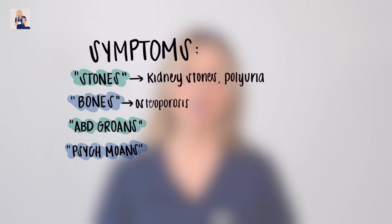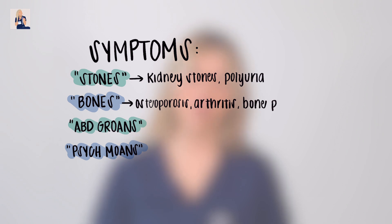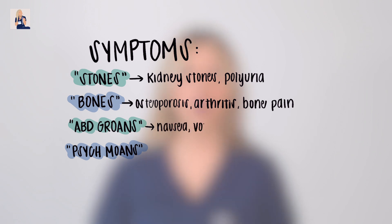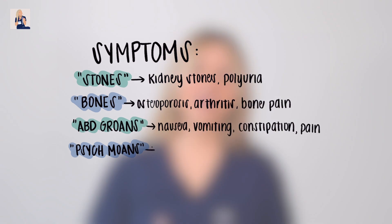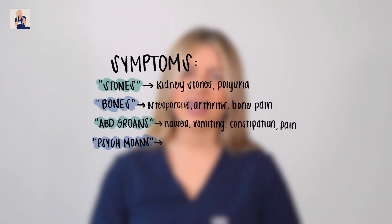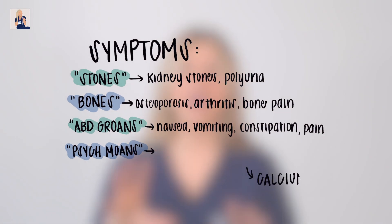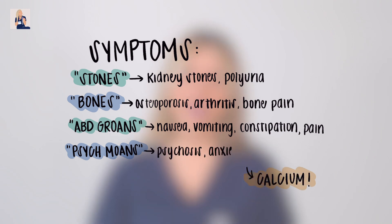Abdominal groans refers to our GI system — indigestion, nausea, vomiting, constipation, and abdominal pain. Psychiatric moans refers to the effects on the central nervous system. Remember, calcium affects muscles and nearly every major organ, so we see symptoms of psychosis, anxiety, lethargy, and memory loss.